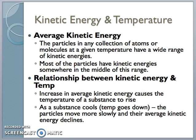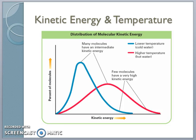This is the example of the graph that I was talking about previously. It shows a distribution of kinetic energies of water molecules at different temperatures. The blue graph here shows the distribution of kinetic energies among water molecules in cold water, and the red is in hot water. Both of these are showing that most of the molecules have intermediate kinetic energies.